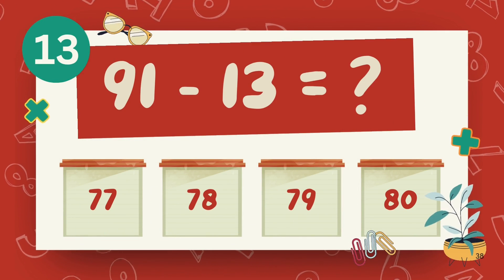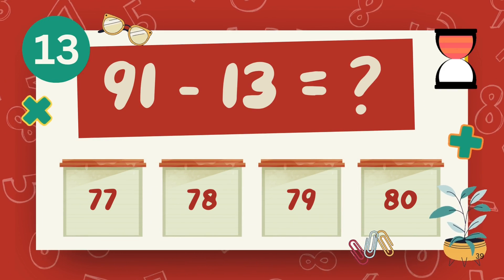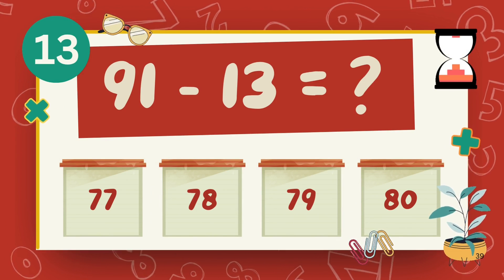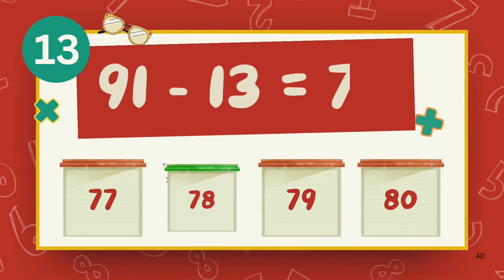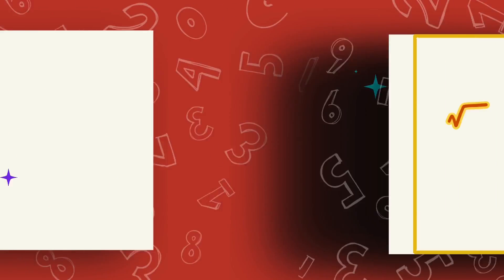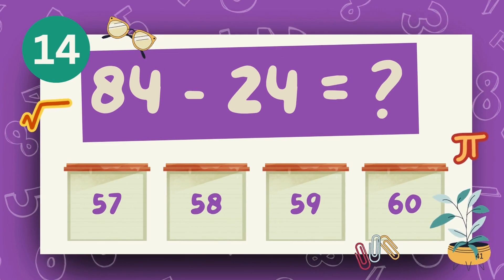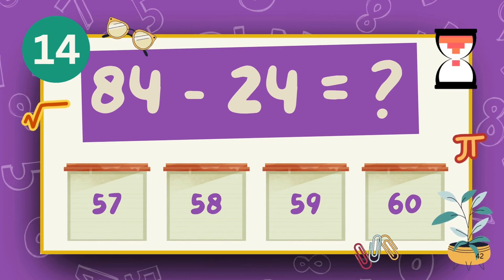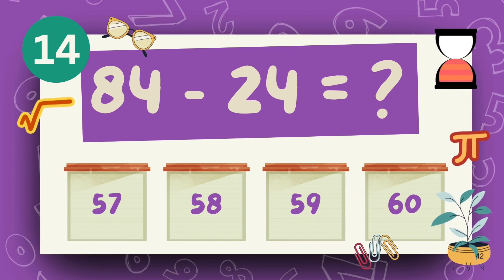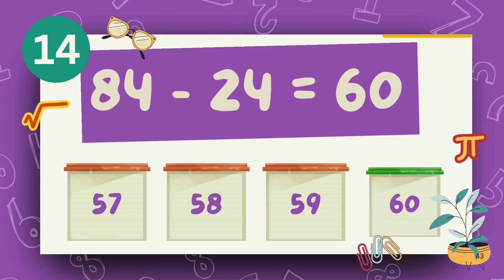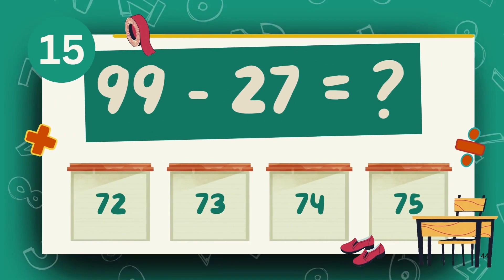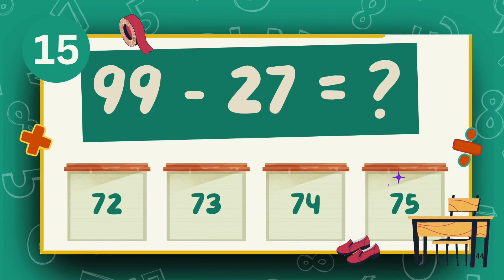What is 91 minus 13? What is 99 minus 27? The answer is 72.